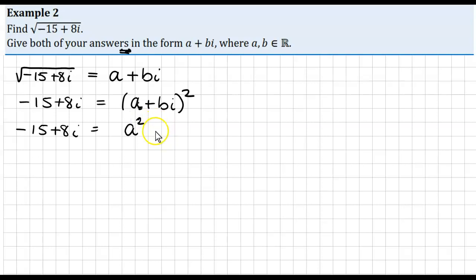twice the product, plus 2ABi plus the square on the last, which is B squared i squared.